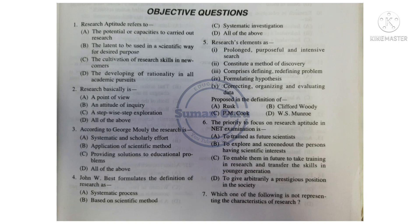Objective Questions. Question 1: Research aptitude refers to — Option A: The potential or capacities to carry out research. Option B: The latent to be used in a scientific way for desired purpose. Option C: The cultivation of research skills in new commons. Option D: The developing of rationality in all academic pursuits. Answer is Option A: The potential or capacities to carry out research.